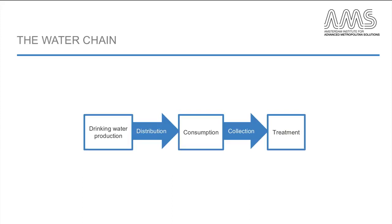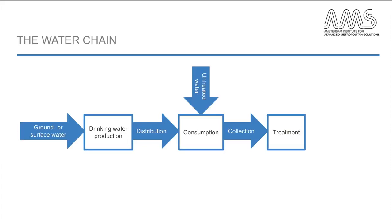Is infrastructure in place to produce drinking water from surface water or from groundwater? Or is water fetched locally and consumed without treatment? The same goes for wastewater — is water discharged to the local environment directly after consumption, or are there facilities in place to treat the wastewater and discharge it afterwards?